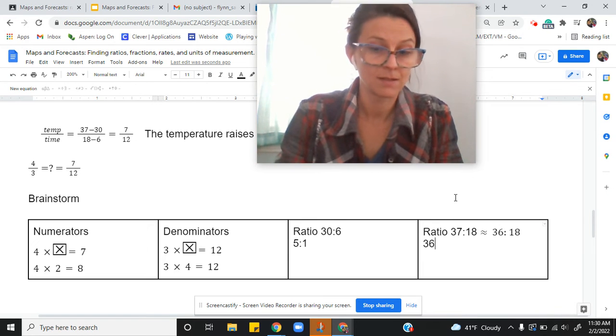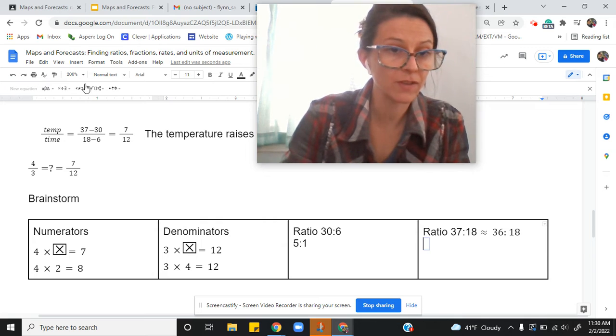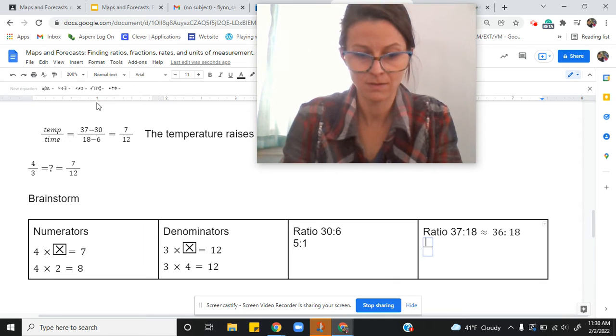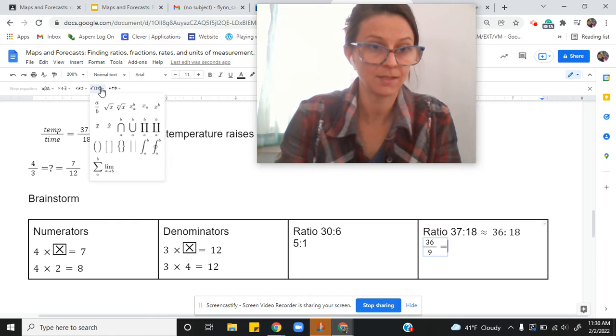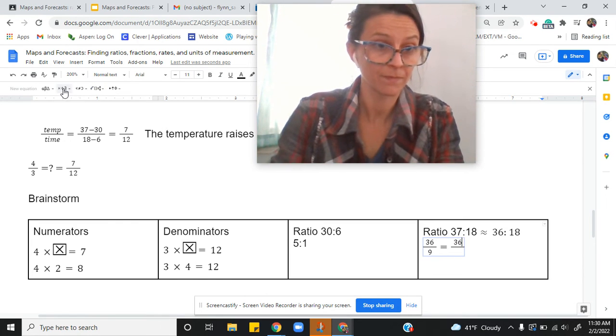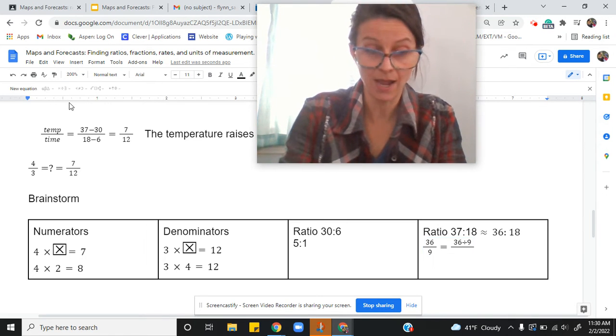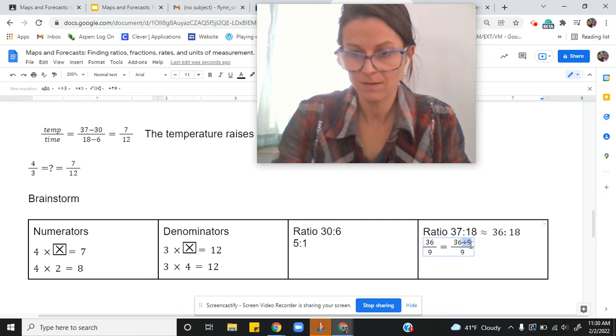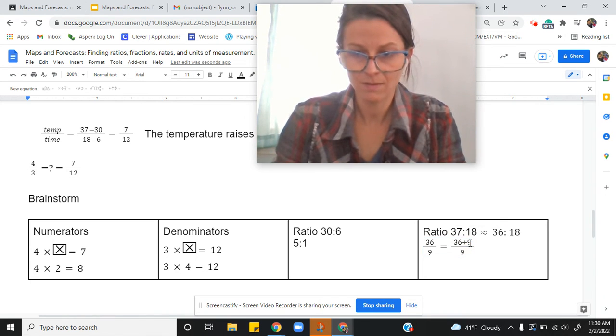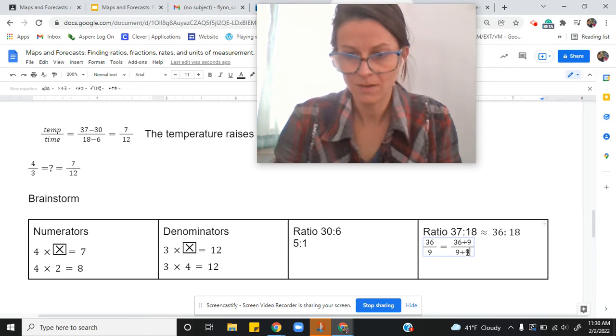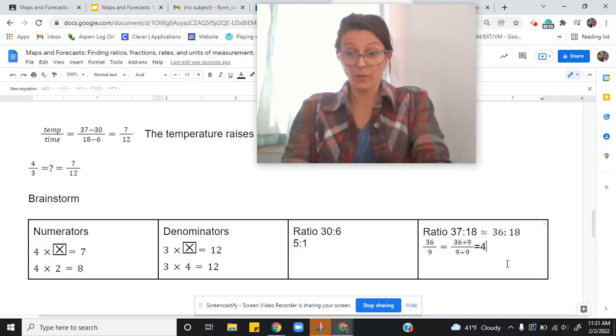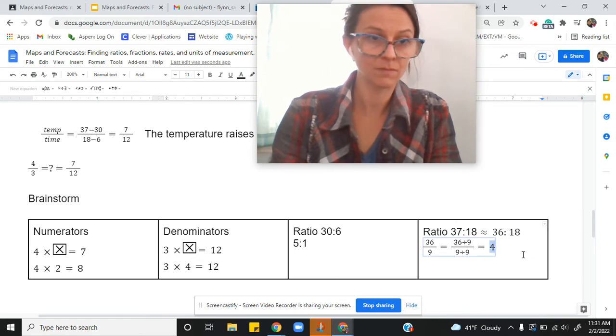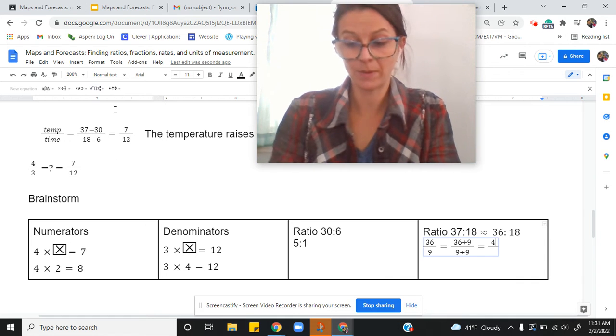So 36 divided by 9, let me just show you everything in my brain, might as well, right? So 36 over 9, it's the same as 36 divided by 9, it's the same as 36 divided by 9 over 9 divided by 9. 36 divided by 9 is 4. 9 divided by 9 is 1.